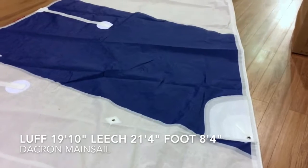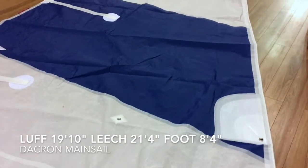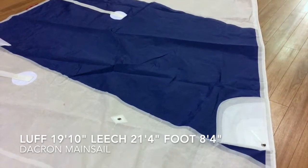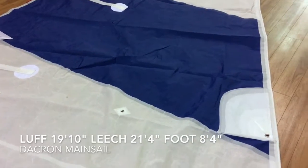Leech is 21 feet 4 inches, and the foot is 8 feet 4 inches. We've got a bolt rope that goes up the luff here. We could swap that out and put some sliders on there or slugs, but the bolt rope right now is 8.9 millimeters. Have a look at that.